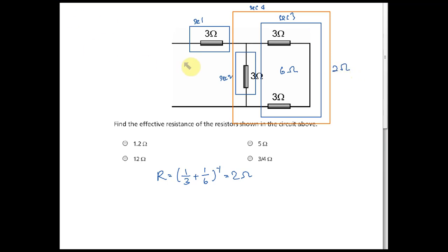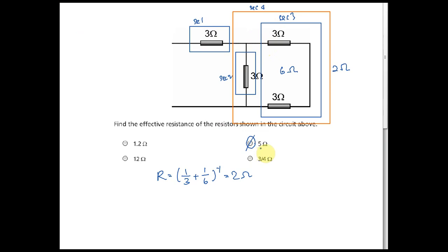Now section one and section four — series or parallel? There is no branch between them, so it is series. Section one is 3 ohm, section four is 2 ohm, so the effective resistance is 3 + 2 = 5 ohm.